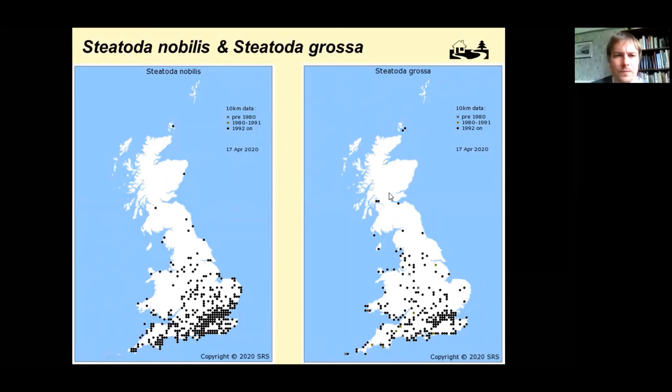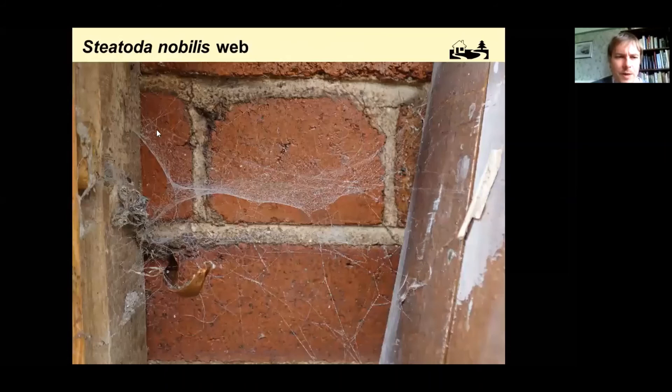Steatoda nobilis makes a very characteristic trampoline web. Here's one in our back garden — I've sprayed it with a water mist just to show its structure, with a little retreat for the spider.